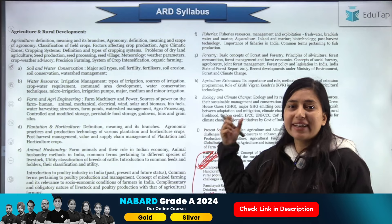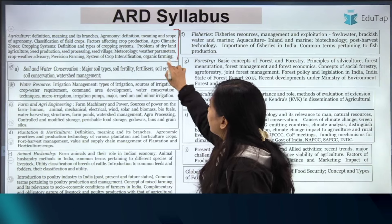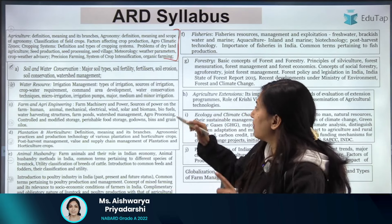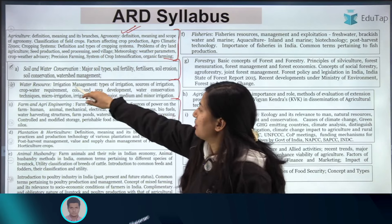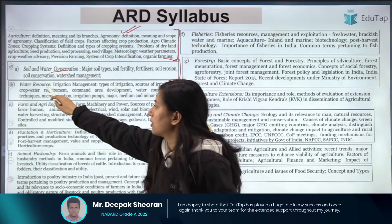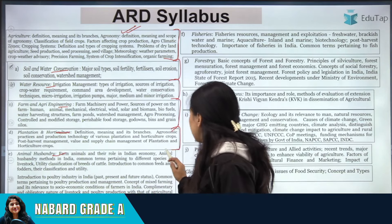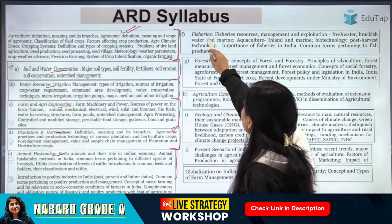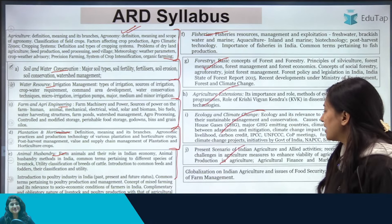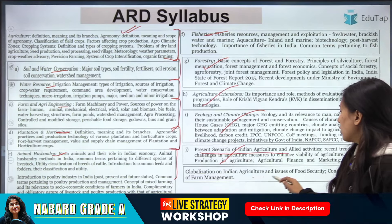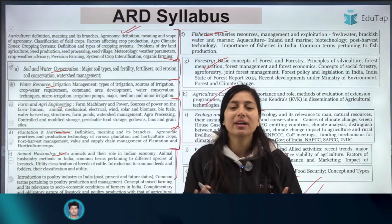Now, how to segregate and simplify the syllabus: divide it into different sections. First is the general agriculture part, then soil and water conservation, water resources, agriculture engineering, horticulture, animal husbandry, fisheries, forestry, extension, ecology, climate change, present scenario of Indian agriculture, globalization's impact on Indian agriculture, and issues of food security. Separate each of these topics and take them one at a time.